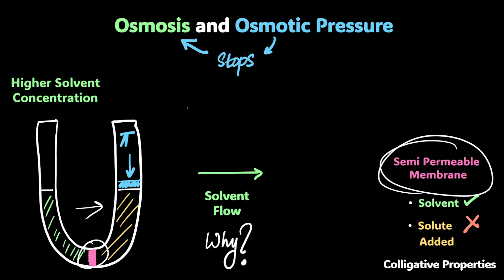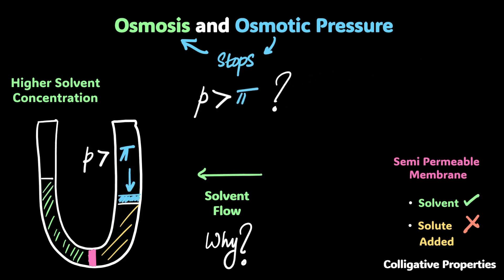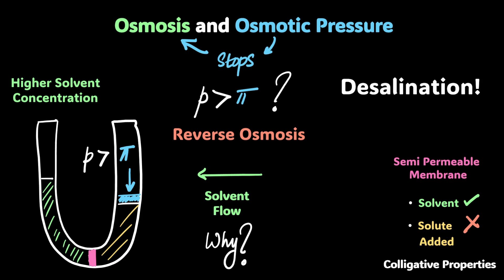What if I keep increasing the pressure to a pressure greater than pi? If you're thinking that flow goes in the opposite direction, you're absolutely right — the solvent flow now happens from the solution side to the pure solvent. This was osmosis when solvent flowed from pure solvent to solution; going in the opposite direction, let's call it reverse osmosis. Very high salt concentrations exist in the sea — so this is used for desalination, which is how you get clean water.